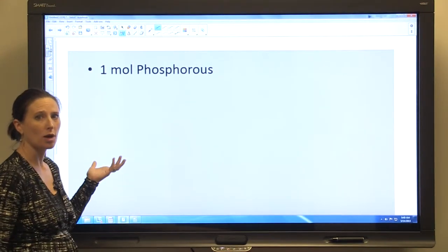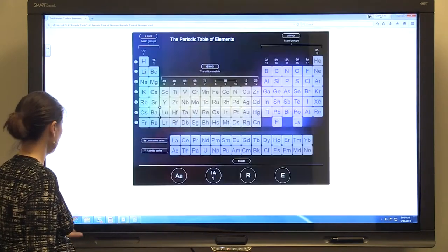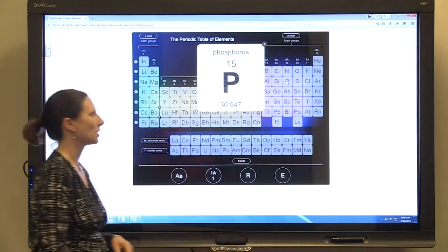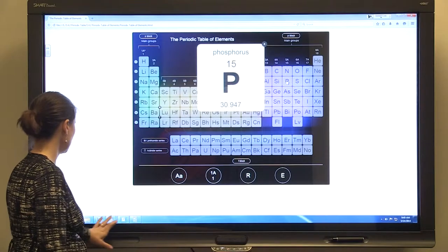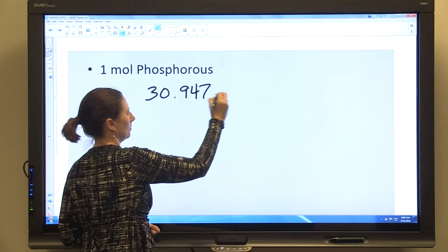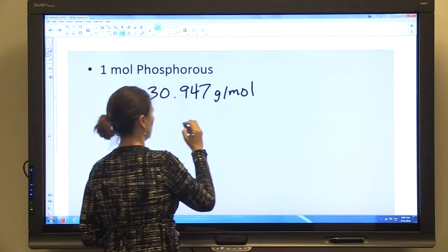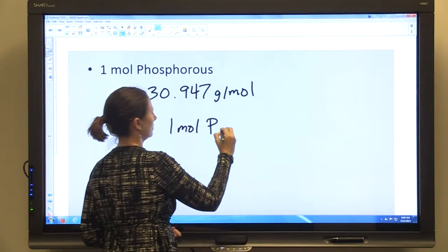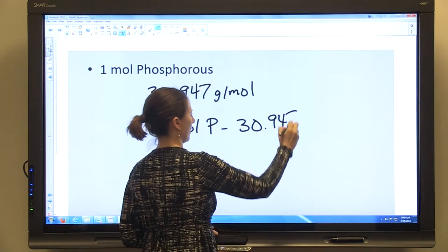We're going to look at one mole of phosphorus. It's going to be the same way to determine it. So we're going to go and look on the periodic table for the atomic weight of phosphorus. It's 30.947 grams per mole. So one mole of phosphorus weighs 30.947 grams.